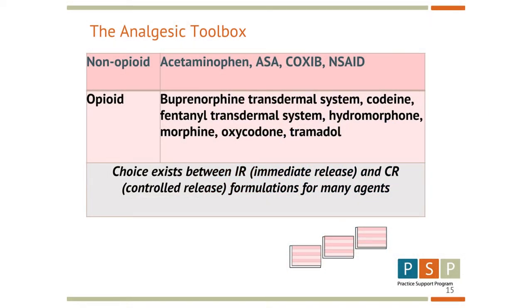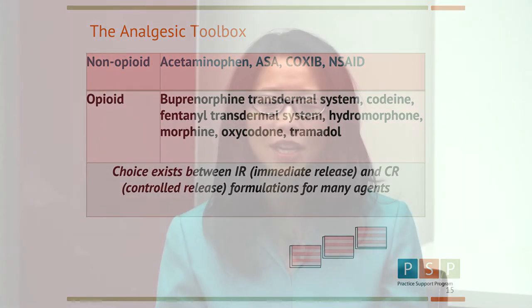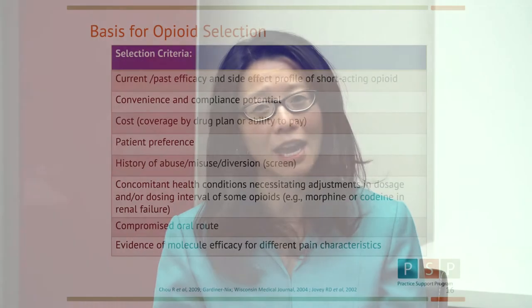Here I wanted to just summarize the typical analgesic toolbox as they refer to it. There's the general non-opioid group, and then the opioids that are available in BC. Here in BC we are familiar with the Butrans patch or buprenorphine patch. There's also the fentanyl patch, but those are not usually used in patients who have not been exposed to opioids at all. The others are codeine, hydromorphone, morphine, oxycodone, and tramadol — I would even put tramadol in here as a mu agonist.